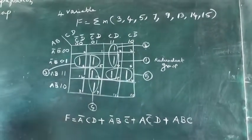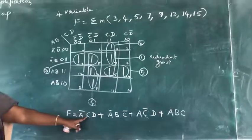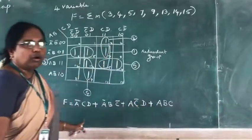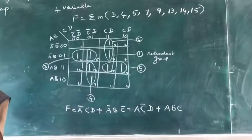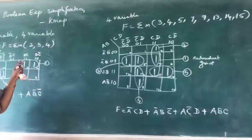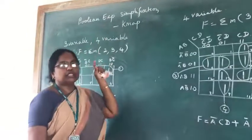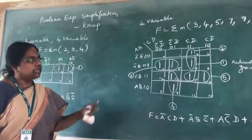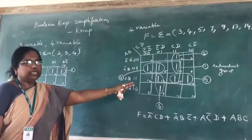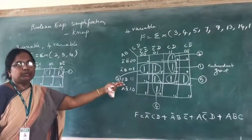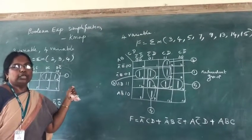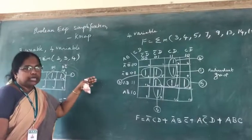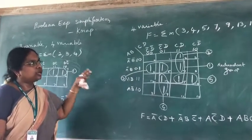The final simplified Boolean function is F = A'CD + A'BC' + AC'D + ABC. In each product term, one variable has been eliminated compared to the original min terms. In summary, we have discussed Boolean expression simplification using K-map for three and four variables. The advantage is we can directly draw the K-map, plot, group, and write product terms without remembering all Boolean rules.